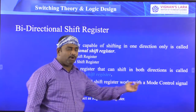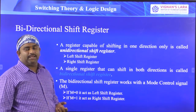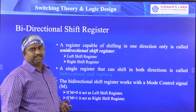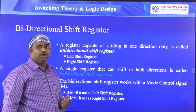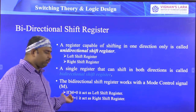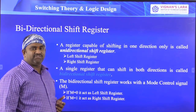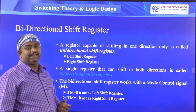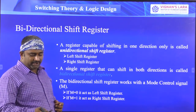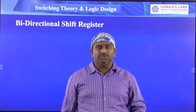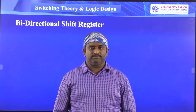The bidirectional shift register works with a mode control signal. Here we are taking a new signal called mode M. Whenever the mode signal M is equal to 0, it works as a left shift register. Whenever the mode M is equal to 1, it acts as a right shift register.